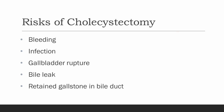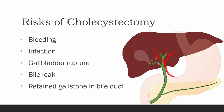Another common risk is bile leak after surgery. This can occur when the clip falls off the bile duct, or from an extra duct that some people have between the gallbladder and the liver, small enough that it is not easily identified during surgery. In some cases, bile leaks will resolve on their own with time, but depending on the severity of the leak, a drain may need to be placed by interventional radiology or you could require another surgery. Another risk is a retained gallstone in the duct following surgery, which could necessitate further procedures and may extend your hospital stay.